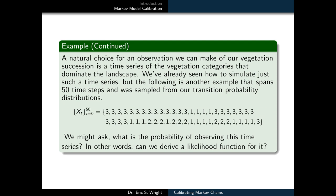A natural choice for an observation we can make of our vegetation succession is a time series of the vegetation categories that dominate the landscape. We've already seen how to simulate just such a time series, but the following is another example that spans 50 time steps and was sampled from our transition probability distributions. In practice, we would imagine that these would be actual physical observations of the dominant state at a sequence of given times that our landscape is sitting in. So we might ask, what is the probability of observing this time series? In other words, can we derive a likelihood function for it?